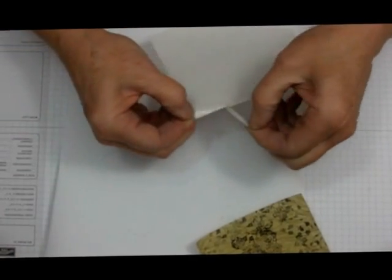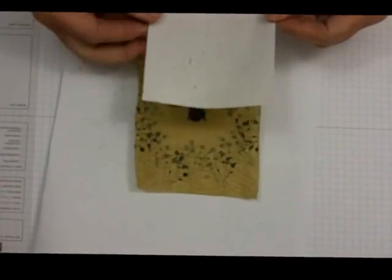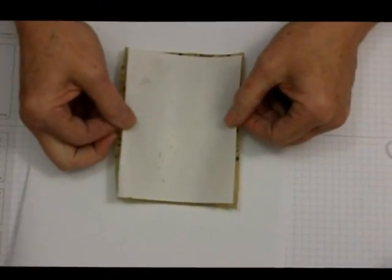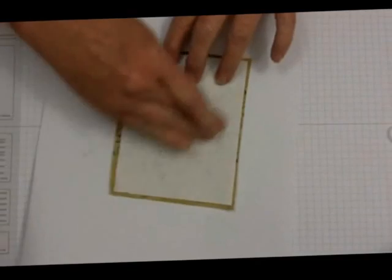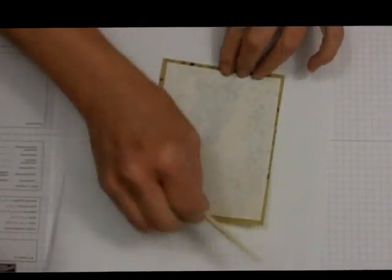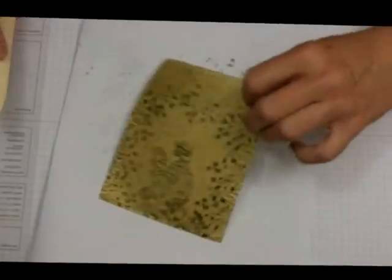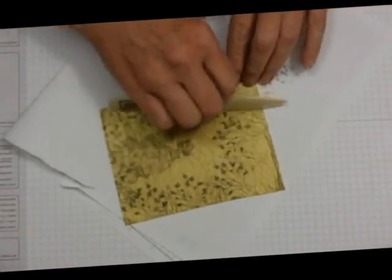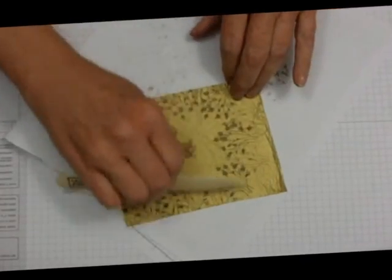Once you've peeled that, and the little strip along the edge, you can place the adhesive side down on the back, non-shiny side of the waffle paper. Press down lightly with your fingers, and then use your bone folder to adhere it well.